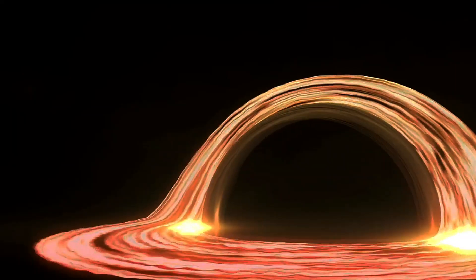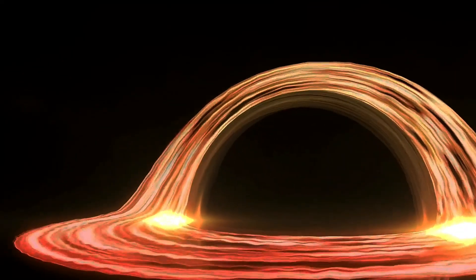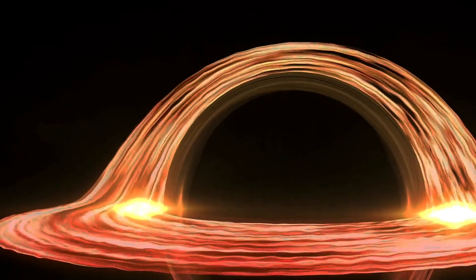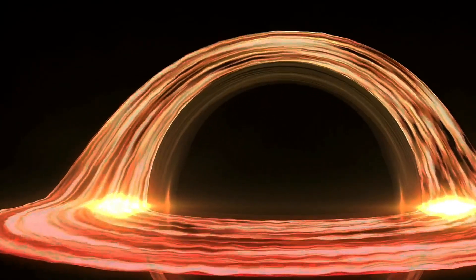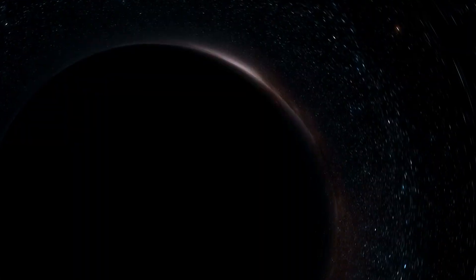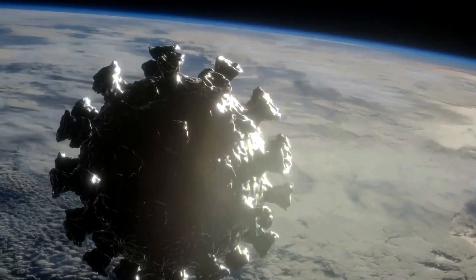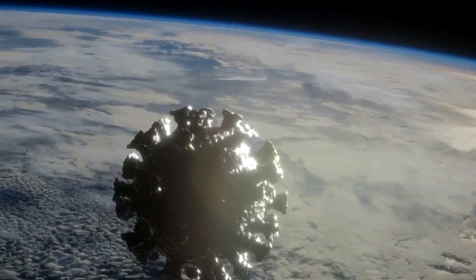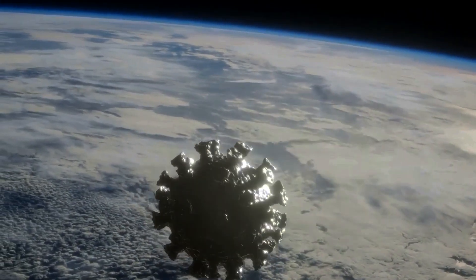Formation and Mechanism: Jets are often associated with accretion disks, where material spirals into a central object. The interaction within these disks, particularly magnetic fields, is thought to play a role in jet formation. The rotational energy of the central object, such as a black hole, is believed to be a significant source of energy for these jets. In the case of black holes, a general relativity effect known as frame dragging may contribute to the alignment and propulsion of the jets.